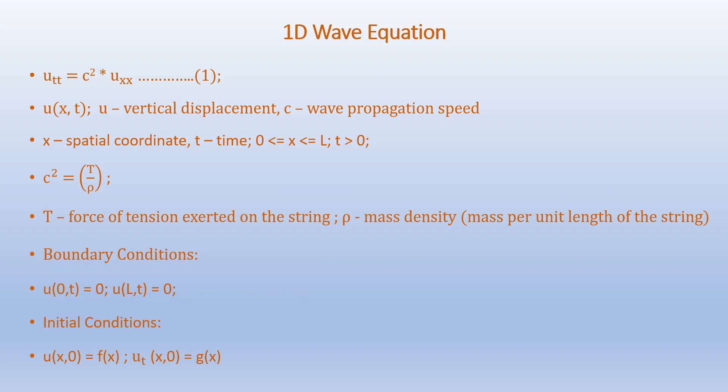Our 1D wave equation is given as Utt equals C squared times Uxx. Here U is a function of X and T, where U represents the vertical displacement and C is the wave propagation speed. X represents the spatial coordinate and T is time in seconds. X varies from 0 to L and time is greater than 0. C squared equals T over rho, where T is the tension force on the string and rho is the mass density — mass per unit length of the string.